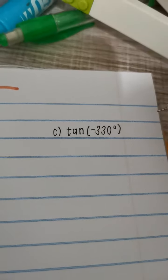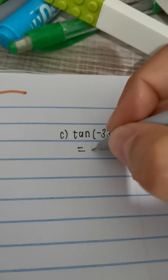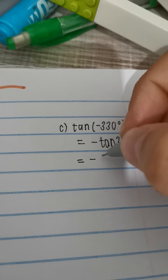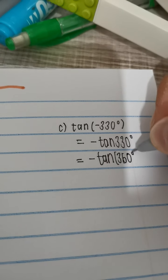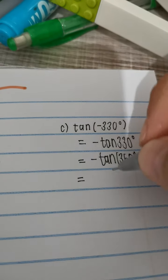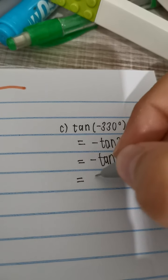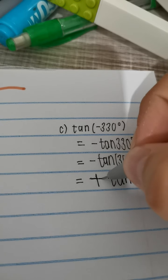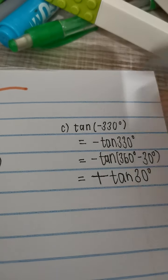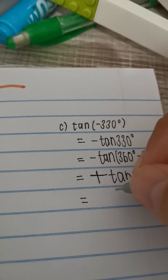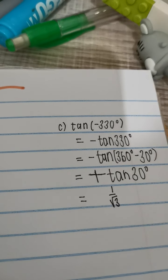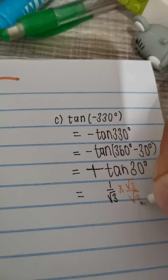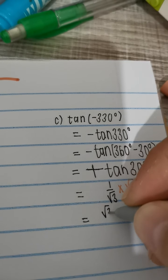This one: negative 330 degrees. Tan of a negative angle is negative, so negative tan. This is in the fourth quadrant, so we use the reduction of 360 minus: negative tan(360° - 30°). In this quadrant, tan is negative, so we get a negative and another negative tan(30°). Negative times negative is positive. Tan of 30° is 1 over √3 from our diagram sheet. We need to rationalize the denominator, so multiply by √3 over √3, giving us √3 over 3.